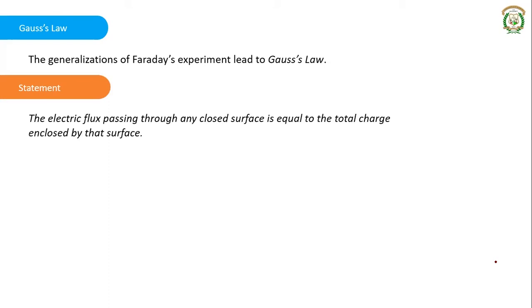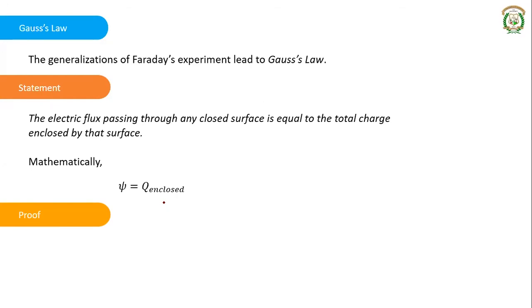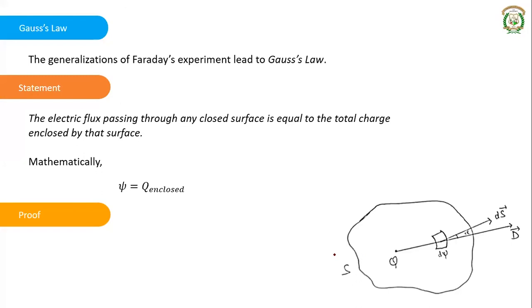The statement of Gauss's Law is: the electric flux passing through any closed surface is equal to the total charge enclosed by that surface. The symbol for flux is ψ and for charge is Q, so mathematically ψ = Q. To apply this law, we consider a random closed surface of surface area S with a charge Q enclosed within it.